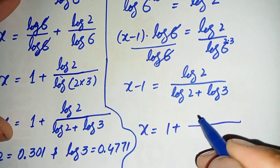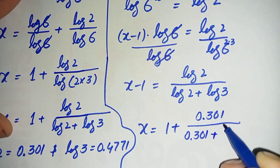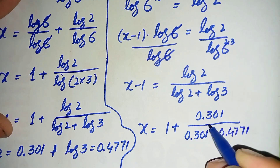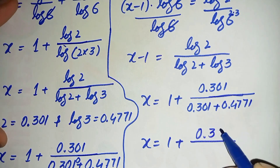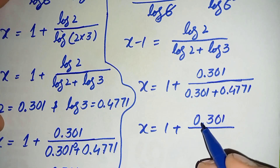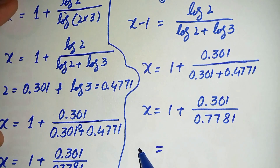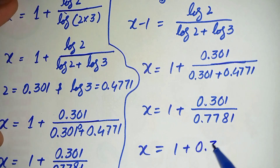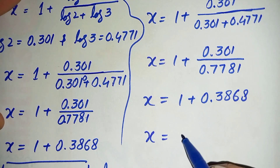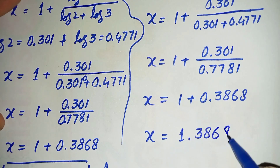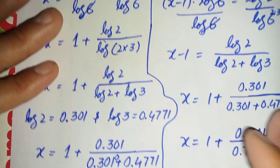Moving minus 1 to the right hand side and substituting the values, x equals 1 plus 0.301 divided by 0.301 plus 0.4771. Adding the denominator gives 0.7781, and dividing gives 0.3868. Adding these gives x equal to 1.3868, which is our answer using the second method as well.